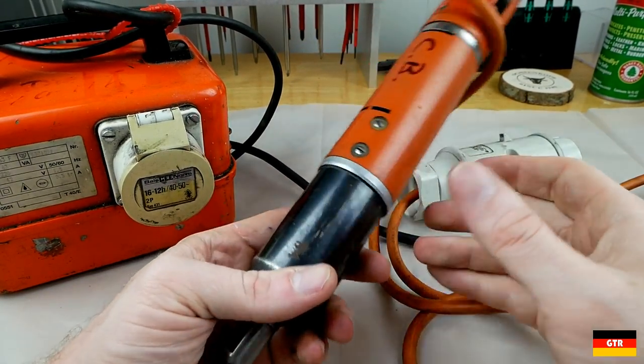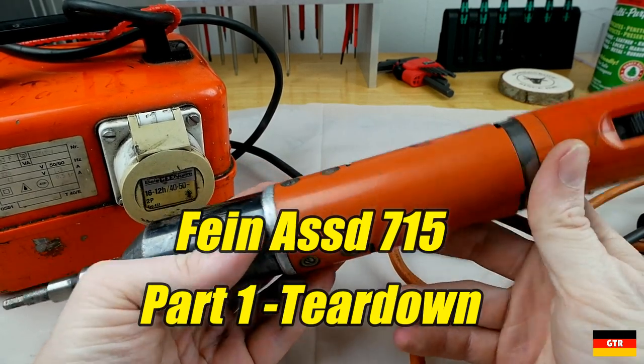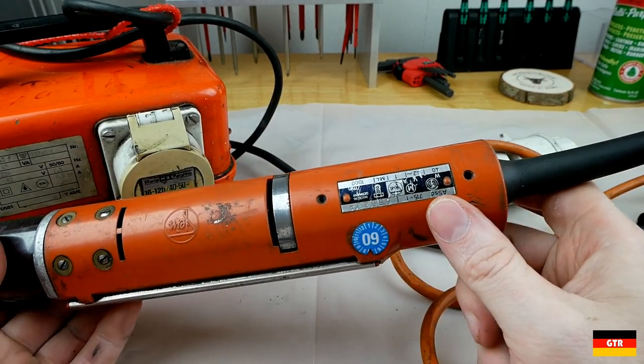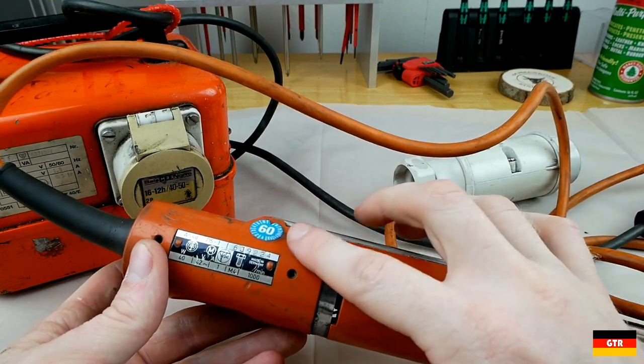Welcome everybody. Today we're going to take a look at this Fein ASSD715. This is a very specialized tool, and it's a very old tool as well. This one was probably made in the 70s.